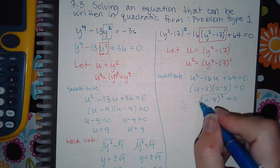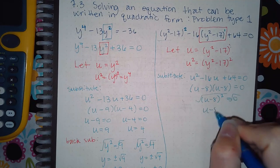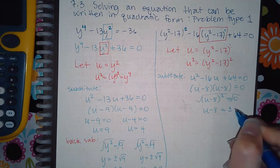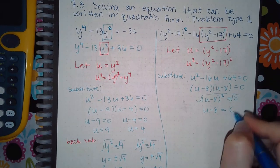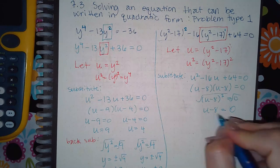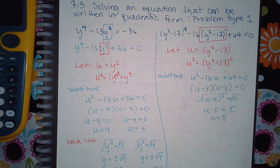Which means u minus 8 squared. If you take the square root of both sides, you get u minus 8 equals. There's no such thing as plus or minus 0. 0 is neutral. So it's just one answer, 0. And then if you add 8 to both sides, you get u equal to 8.